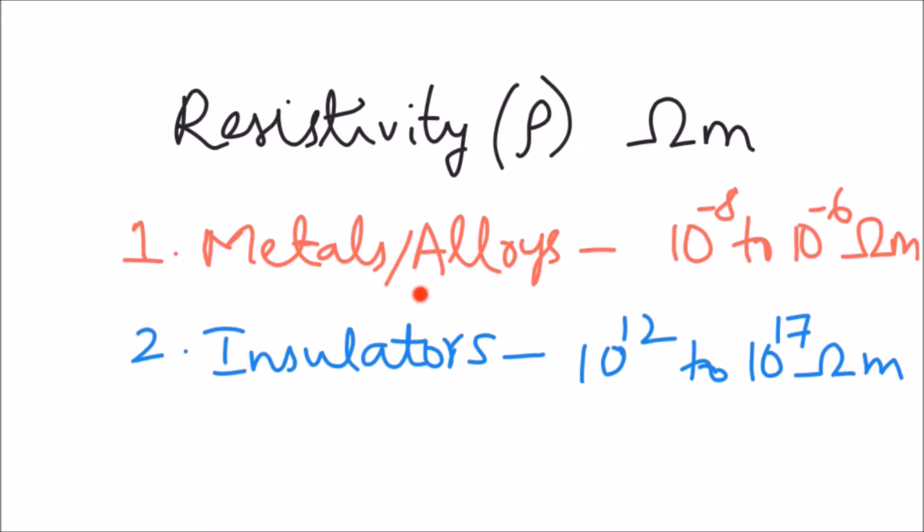Pure metals like copper and aluminium are used in the conduction of electricity for this very reason of having low resistivity. Alloys, which is a mixture of one or more metals, generally have higher resistivity than their constituent metal.